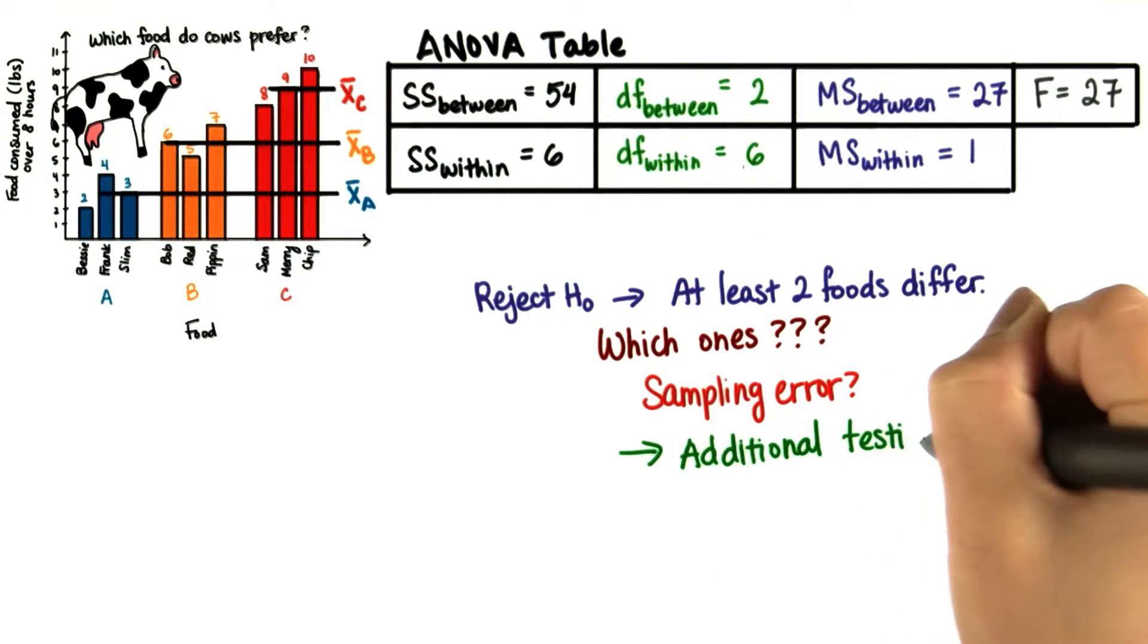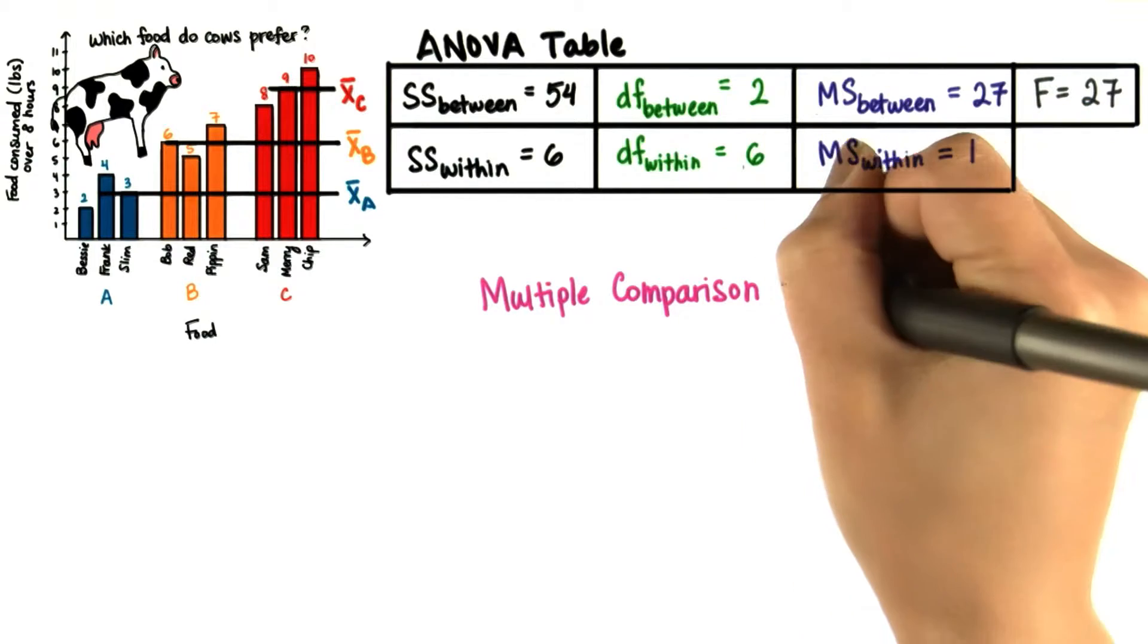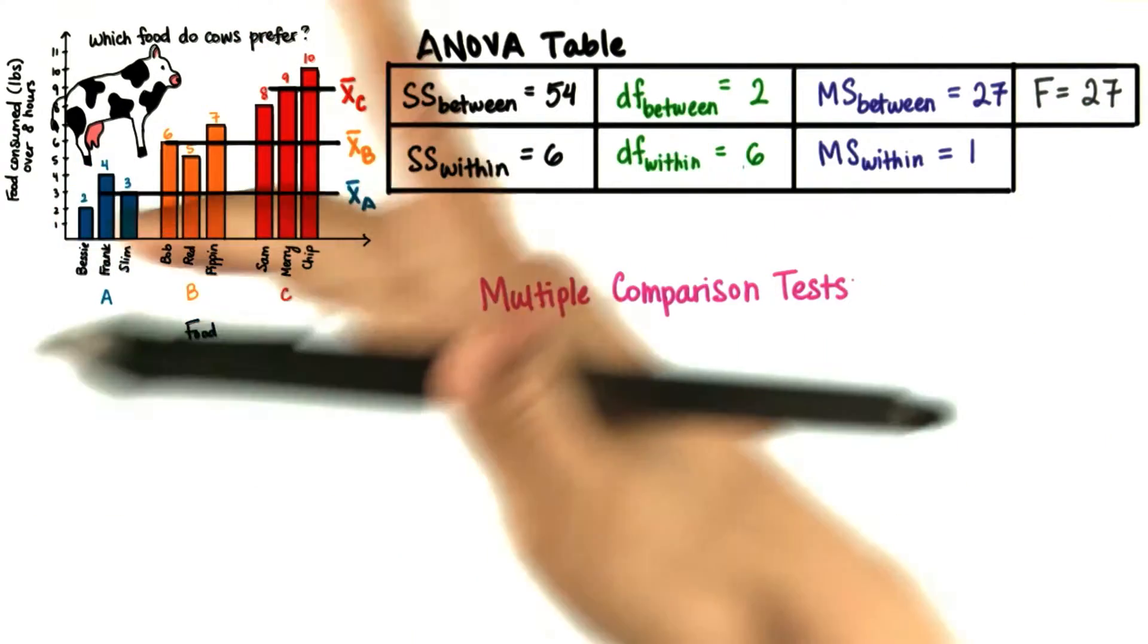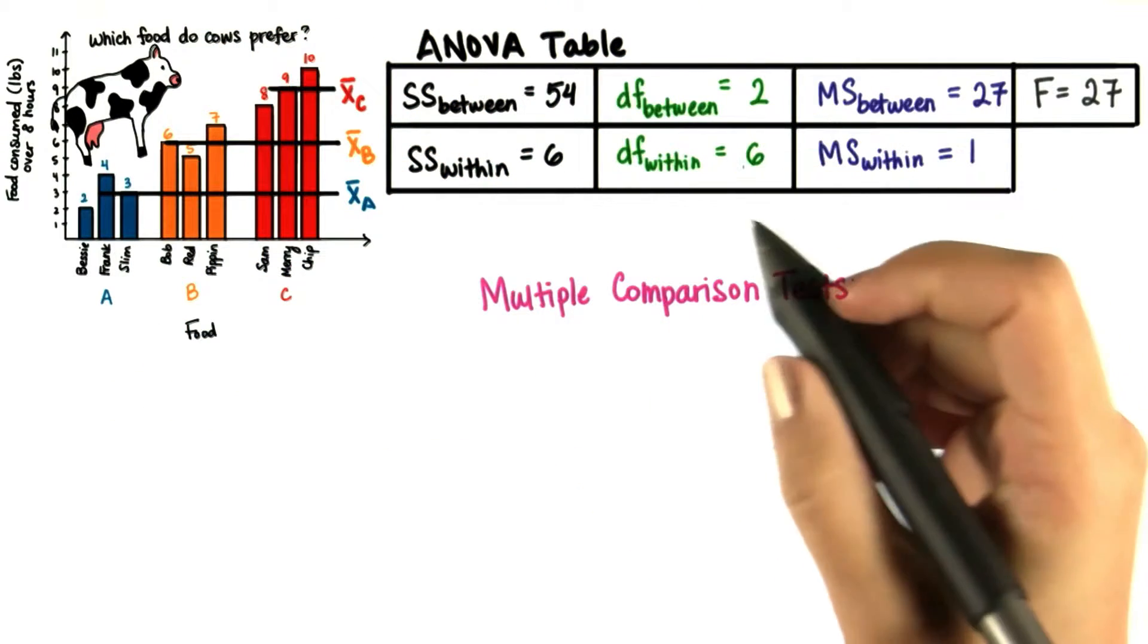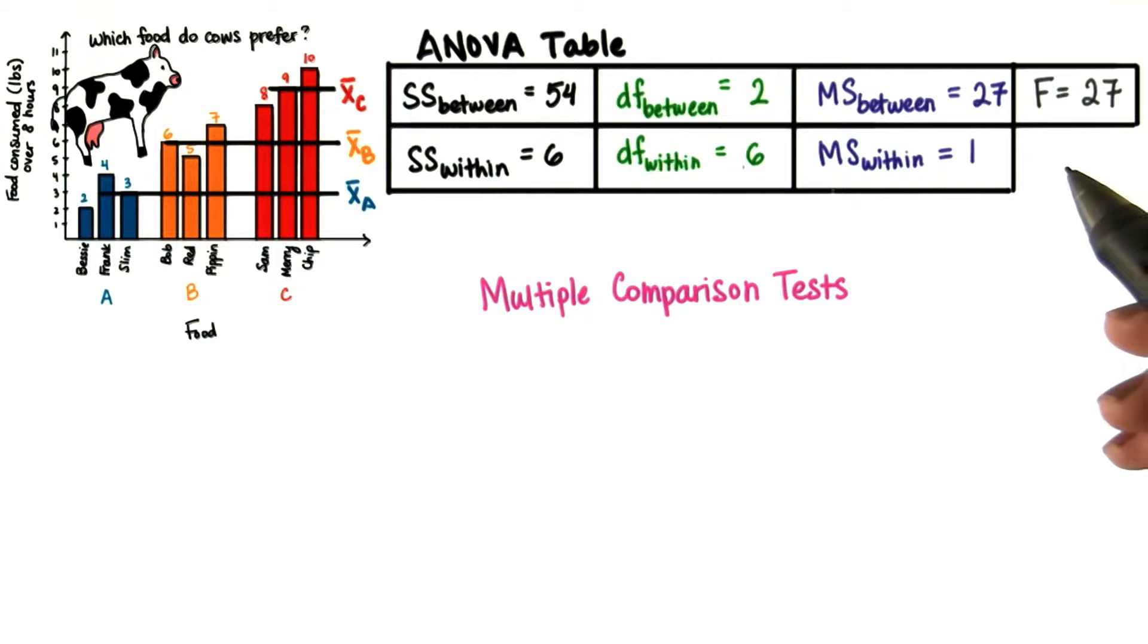Therefore, we need to do additional testing to see which means are different. This additional testing is called multiple comparison tests, so we're able to compare all of the means with each other. We wouldn't do a multiple comparison test until after we've done ANOVA.